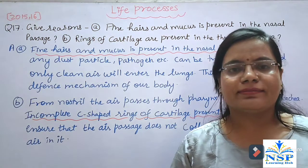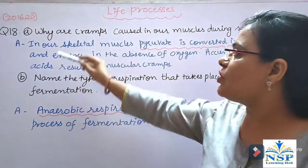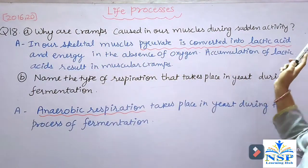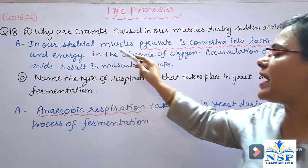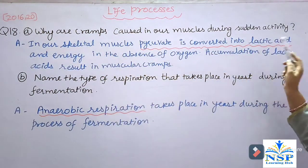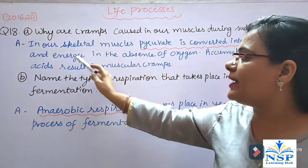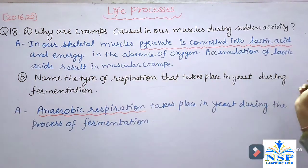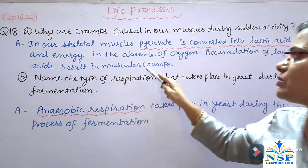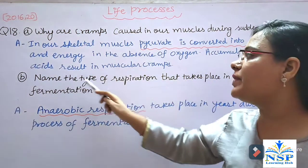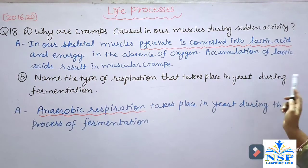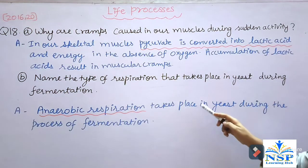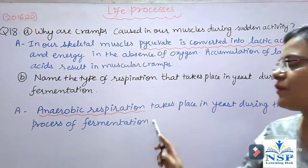Next question: Why are cramps caused in our muscles during sudden activity? In our skeletal muscles, pyruvate is converted into lactic acid and energy in the absence of oxygen. Accumulation of lactic acid results in muscular cramps. Name the type of respiration that takes place in yeast during fermentation. Anaerobic respiration takes place in yeast during the process of fermentation.